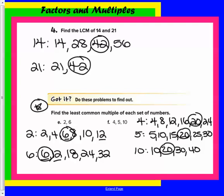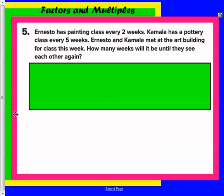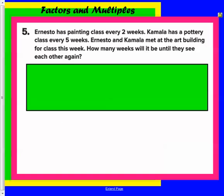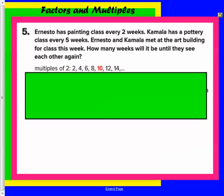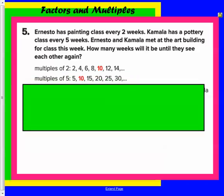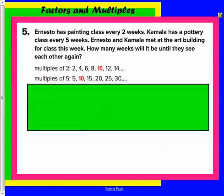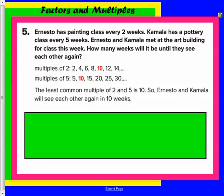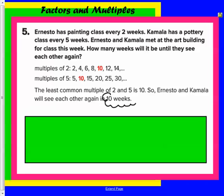Let's look at a real-world example. Ernesto has painting class every 2 weeks. Kamala has pottery class every 5 weeks. They meet at the art building for class this week. How many weeks will it be until they see each other again? We need to list the multiples of 2 and 5. Go ahead and try that for me right now. Check with your red pen. The multiples of 2 are shown here, and the multiples of 5 are also shown here. So the least common is 10. So at week 10, they would be meeting up.